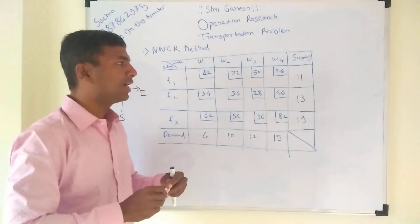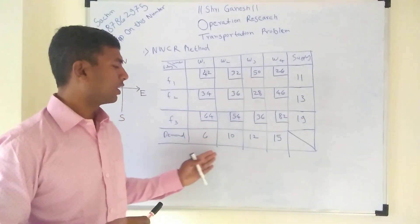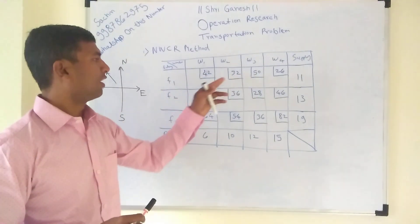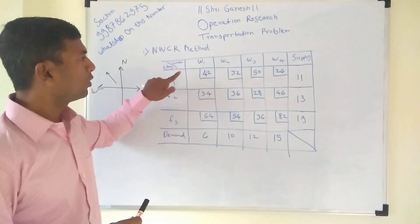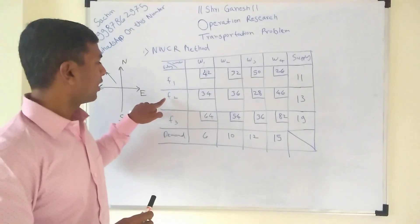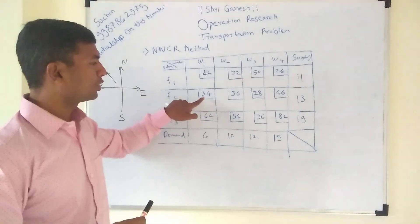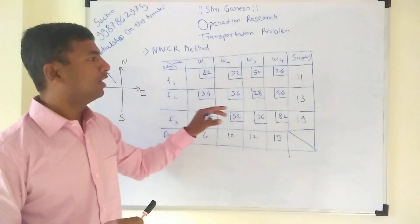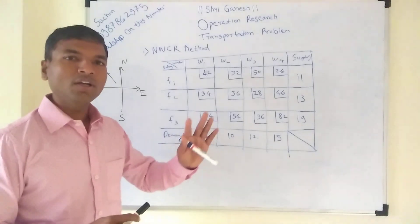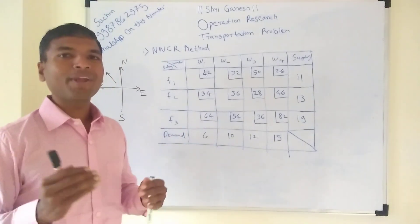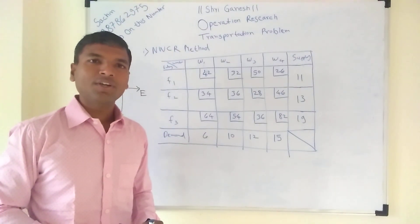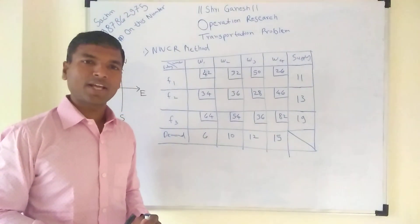Normally the sums are given in a tabular format. You have to write down the supply on one side and demand on the other. These are the values of each cell. For example, from factory 1 to warehouse 1, it will cost you 42. From factory 2 to warehouse 1, it will cost 34. These are the transportation costs for particular materials from factory to warehouse. Our main objective is to find out the minimum transportation cost, which will be beneficial for the organization.